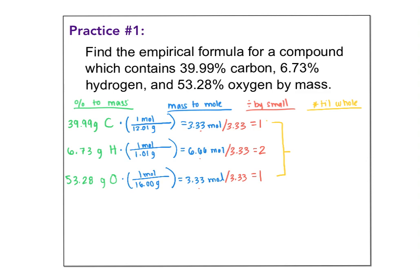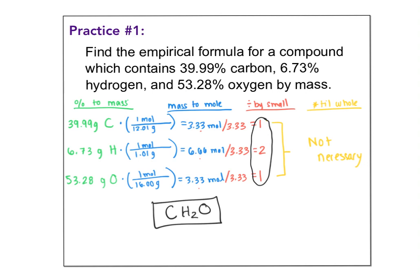In this case they're all whole numbers, so the last step isn't necessary. We write the actual formula using these numbers as subscripts: C1H2O1. That is the empirical formula for this chemical.